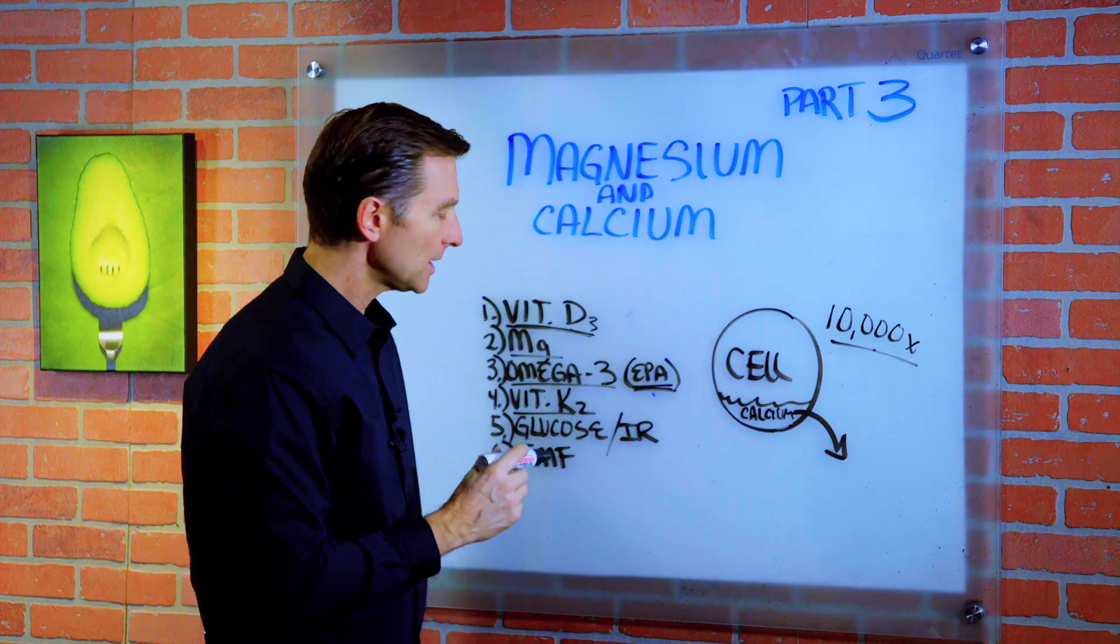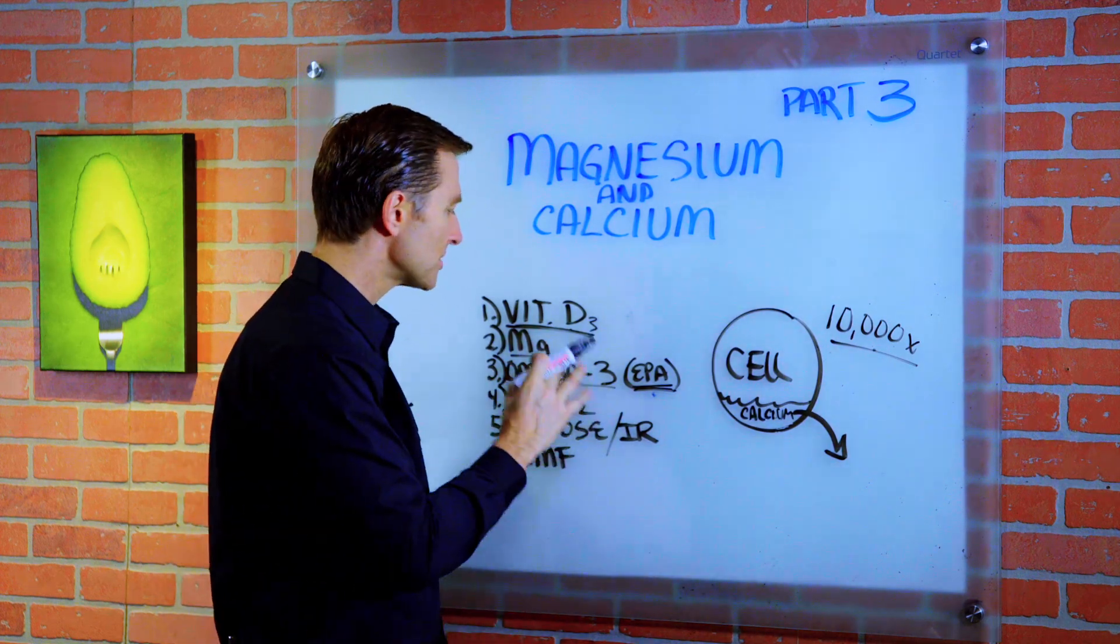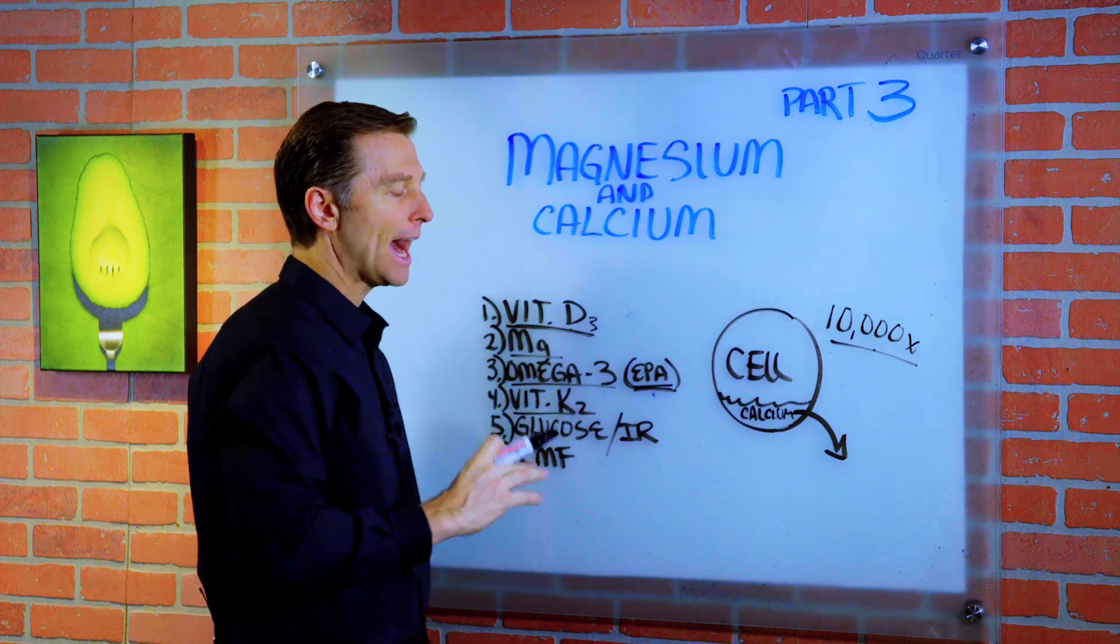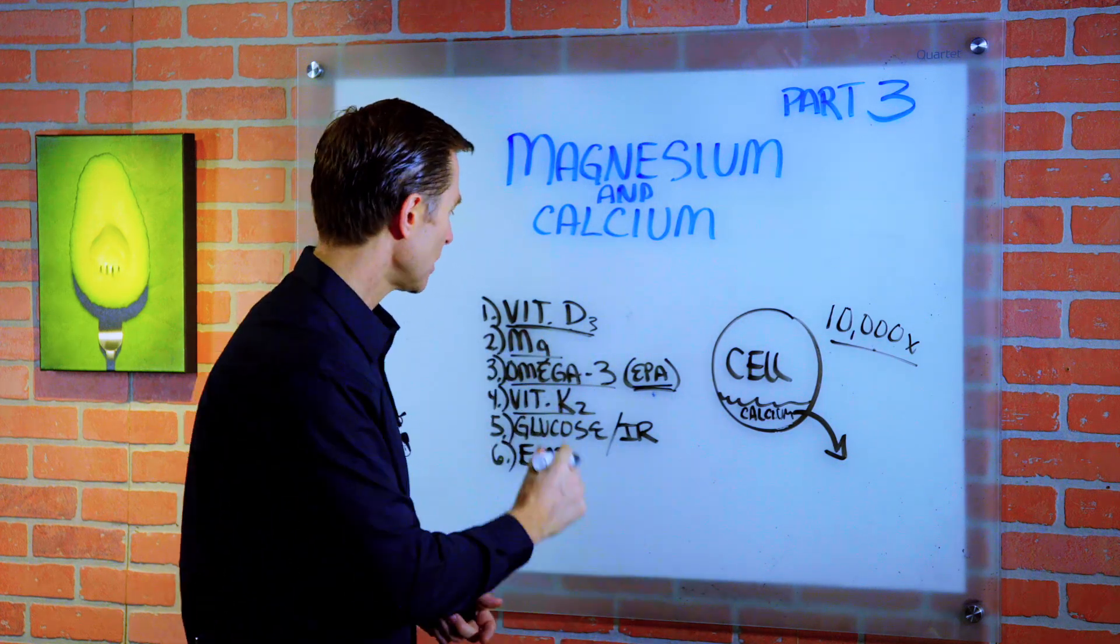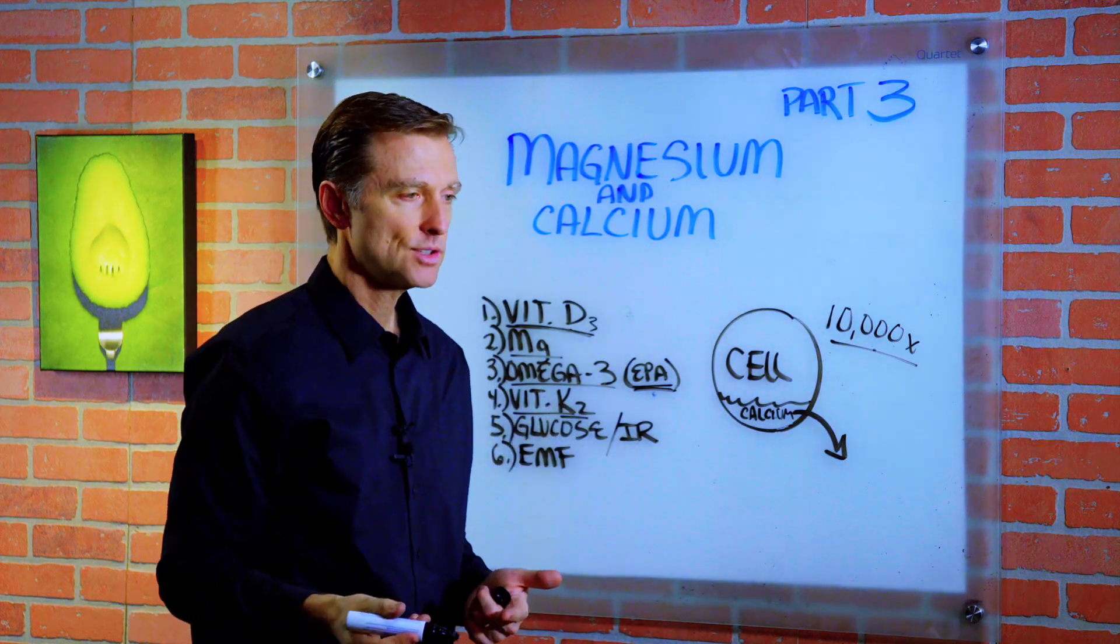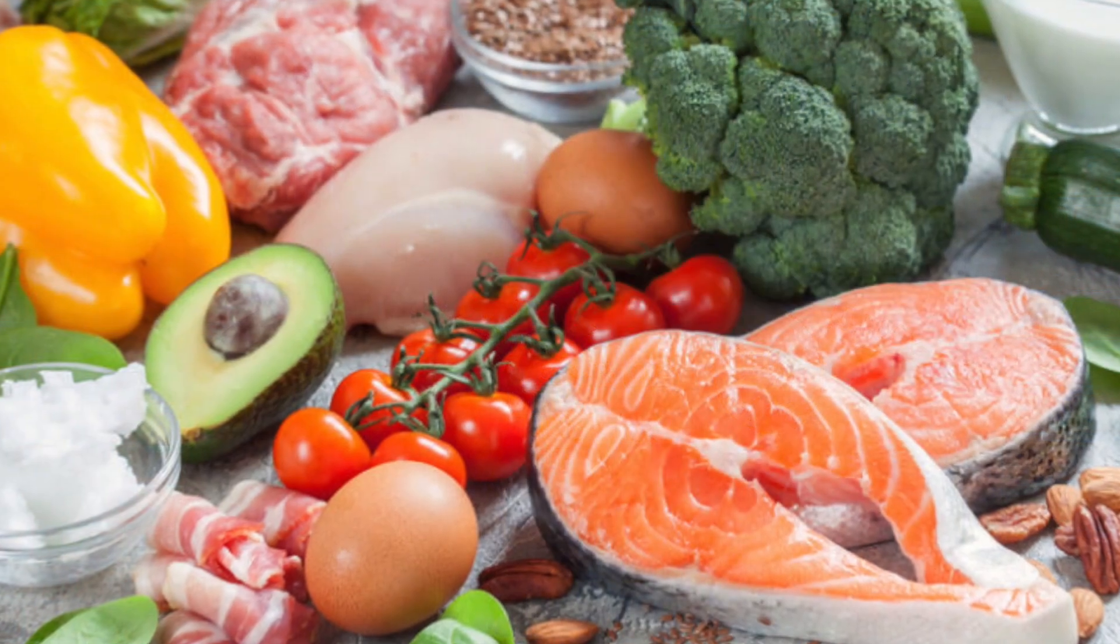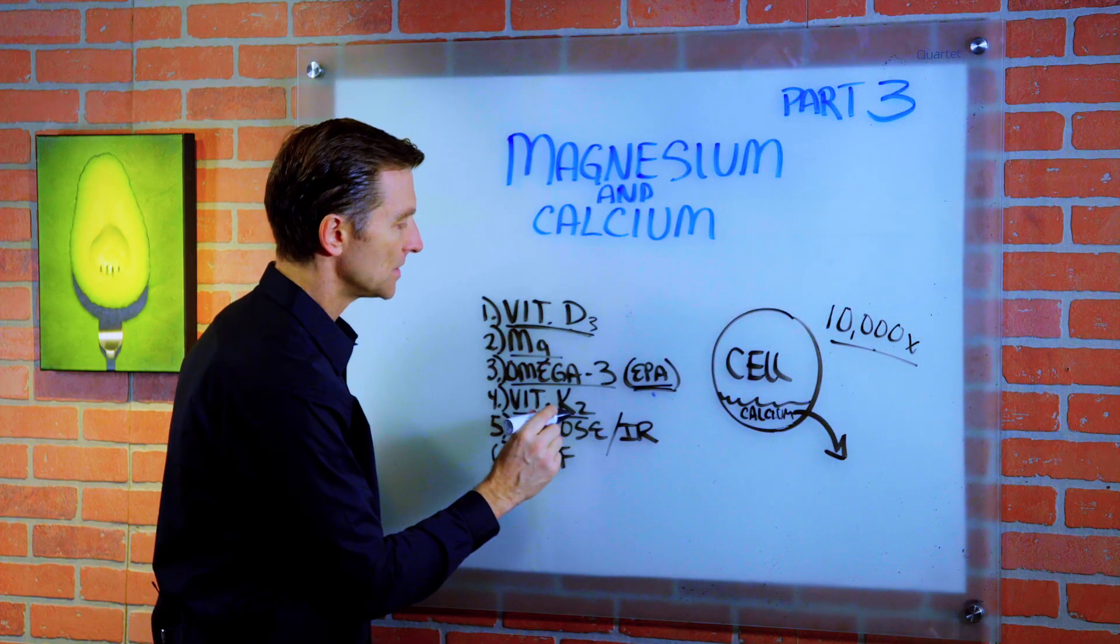Then we get vitamin K2. Vitamin K2 is different than K1. It's a fat-soluble vitamin that helps transport calcium out from the wrong places and into the correct places. So you may be deficient in vitamin K2. And guess where you get vitamin K2? In fatty foods. If you're on a low-fat diet, well, guess what? You might be deficient in K2.